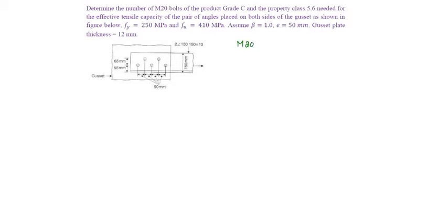M20 diameter bolts of class 5.6 are given. Ultimate bearing capacity of the bolt will be 500 MPa for 5.6 grade bolts.